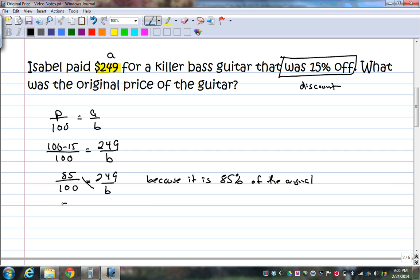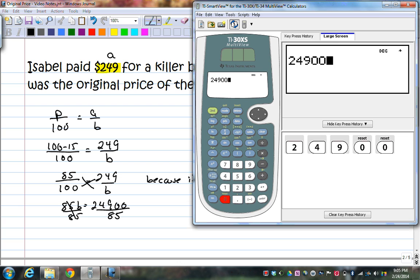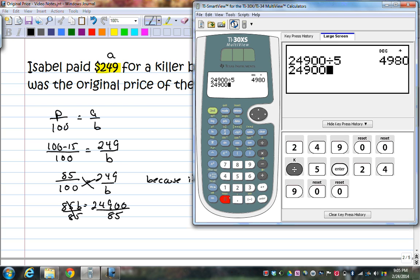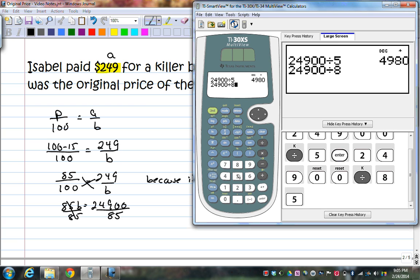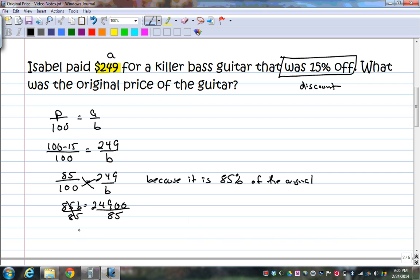Multiply diagonally and I get 85b is equal to 24900. I'm going to divide by 85, divide by 85, and I'll pull up my calculator, 24900 divided by 85, and I get 292.94. So b is equal to 292.94. So the original price of the bass guitar was $292.94.